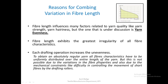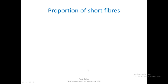To obtain an absolutely regular yarn, all fiber characteristics have to be uniformly distributed over the entire length of yarn. However, such a situation is not possible due to variations in fiber properties and also due to mechanical constraints, like difficulty in controlling the movement of short fibers by the drafting rollers. Because of both these reasons, we find that we cannot have a very regular yarn, so a better way is to reduce the proportion of short fibers.